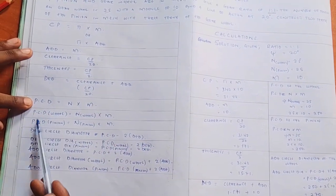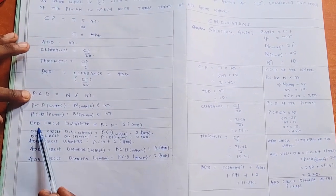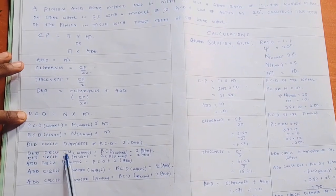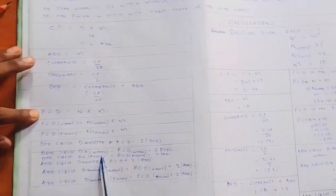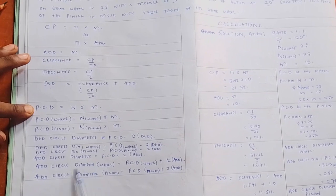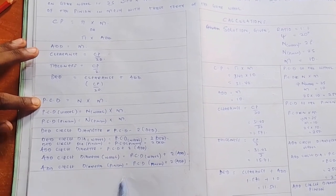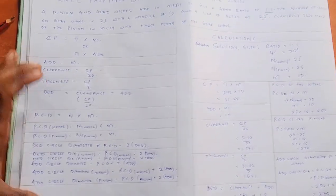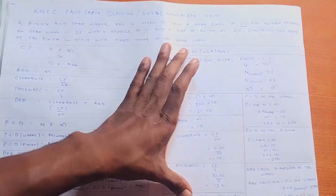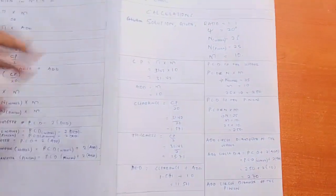You should also know the formula for the PCD of the wheel, the PCD of the pinion, the dedendum circle diameter of the wheel, the dedendum circle diameter of the pinion, and the addendum circle diameter of the pinion. You should know all these formulas so that you can apply them by substituting the given figures.